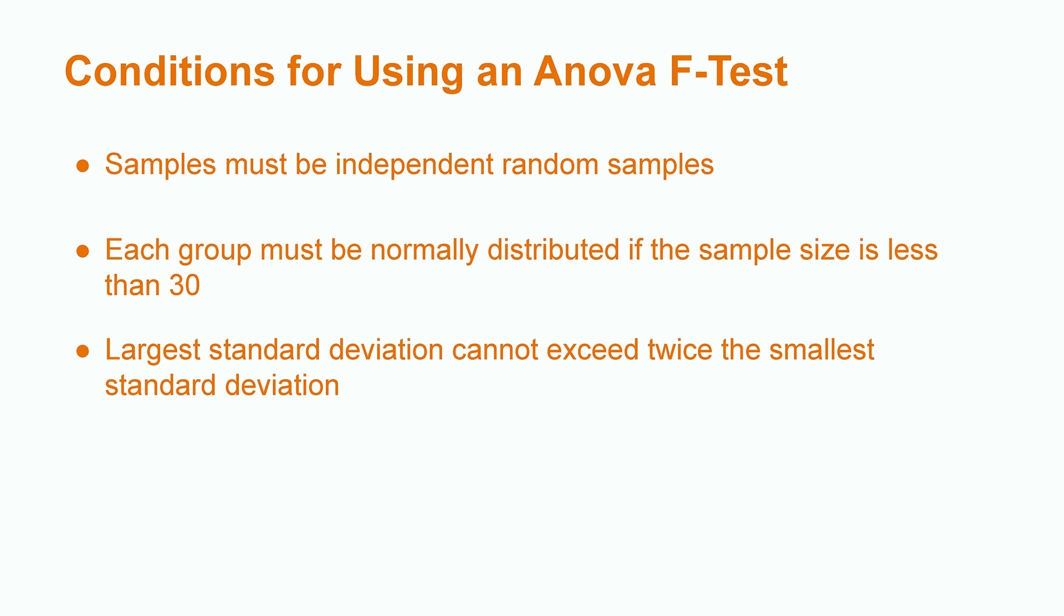In order to use an ANOVA F-test, there are a few conditions that need to be met. For starters, the samples used must be independent random samples. The samples in each group also must follow a normal distribution unless the sample sizes are large enough, typically greater than 30 as a rule of thumb.